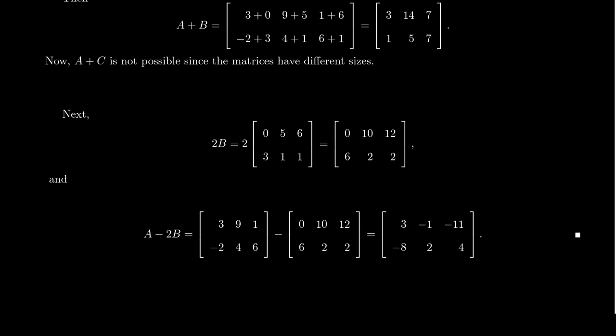If we can scale matrices and add matrices, that means we can do linear combinations of matrices. So for example, we could do the linear combination A minus 2B. Take the exact same matrix A from above and then take the matrix 2B that we computed just a moment ago and then subtract these things. So you're going to take 3 minus 0, which is 3. You're going to take 9 minus 10, which is negative 1. You're going to take 1 minus 12, which is negative 11. You're going to take negative 2 minus 6, which is negative 8. You'll take 4 minus 2, which is 2. And then lastly, you'll take 6 minus 2, which is 4.